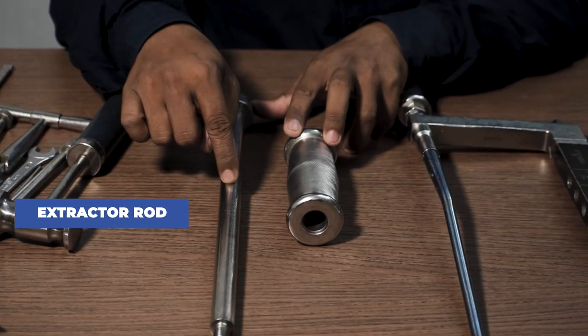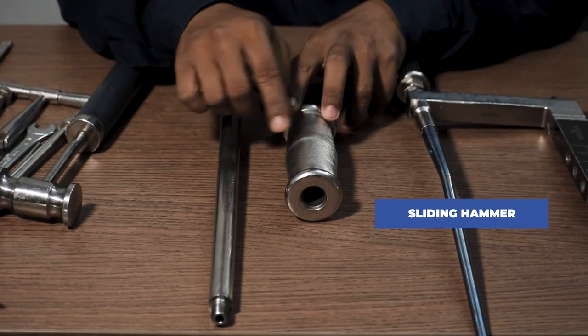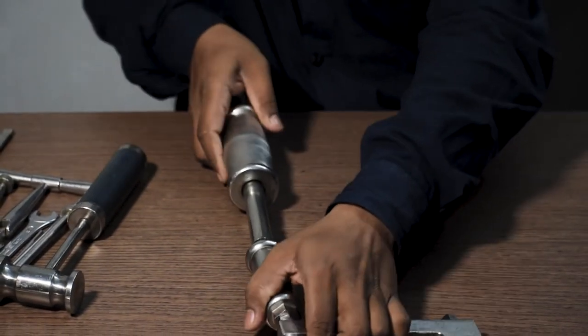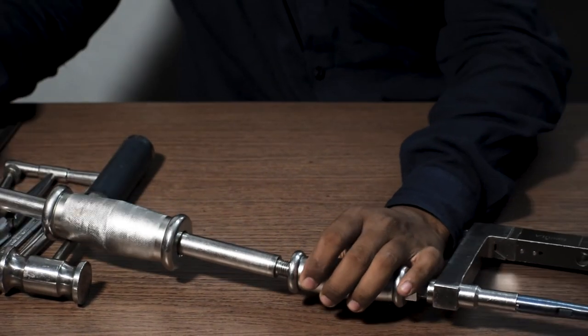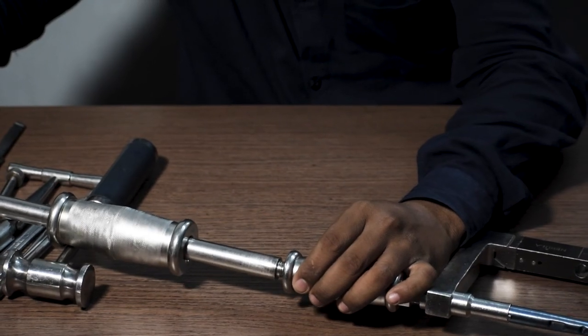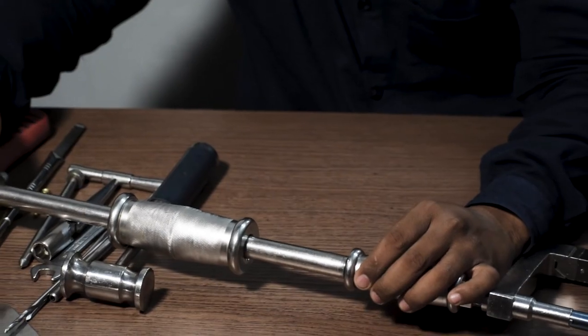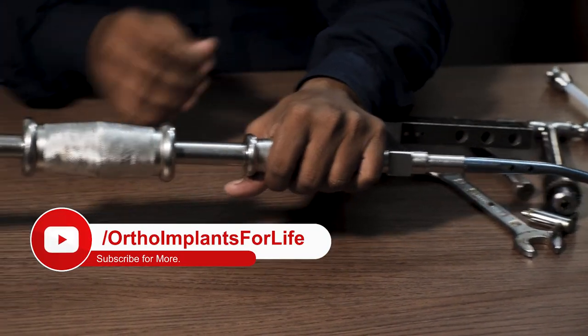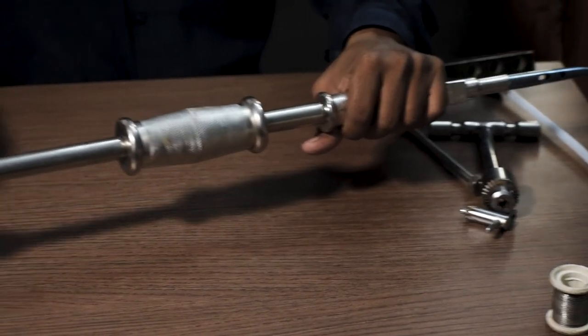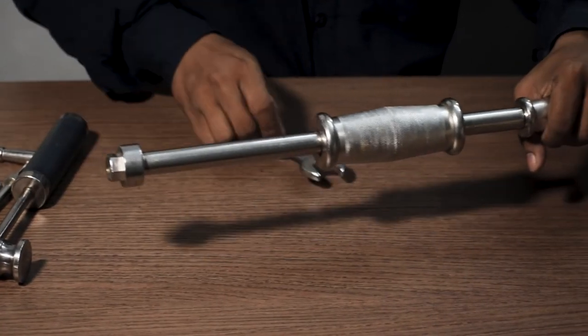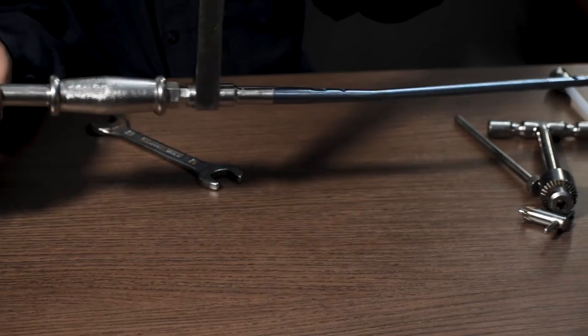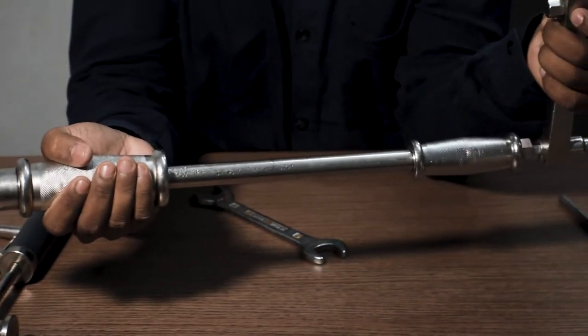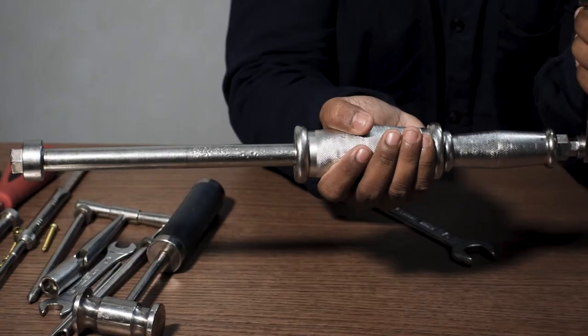This is an attachment which you can use by fixing it with the hammering adapter like this, and further tightening is done here with the help of a spanner. This is used for back hammering to do extraction or to impact for the insertion of the nail.